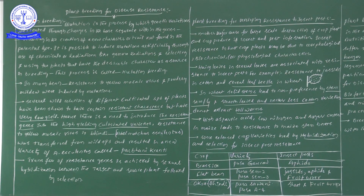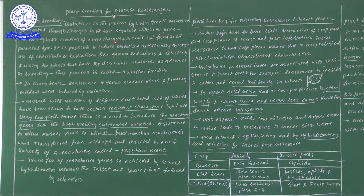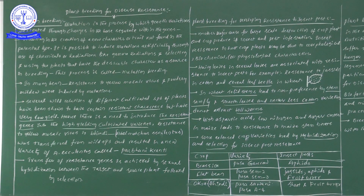These new characters are not found in the parental type. We take one plant and change the base sequence within it — we alter it. When we change the base sequence, we can automatically create new varieties or new characters, leading to the formation of a new plant with characters not present in the parent.